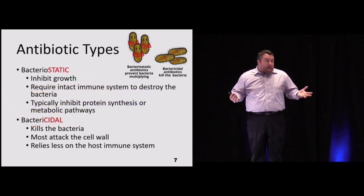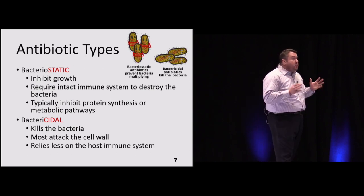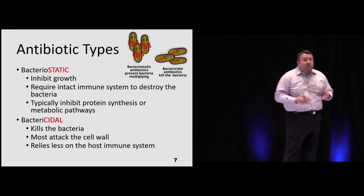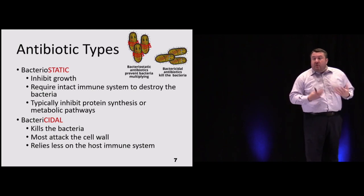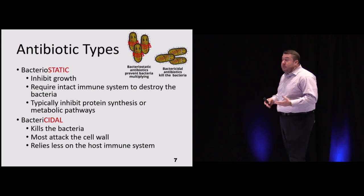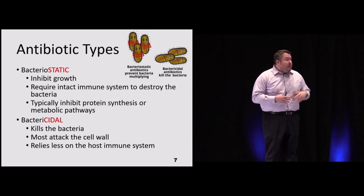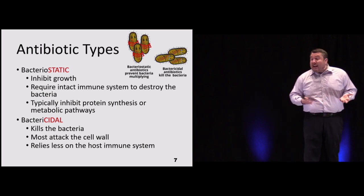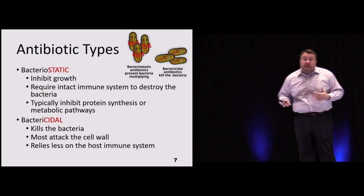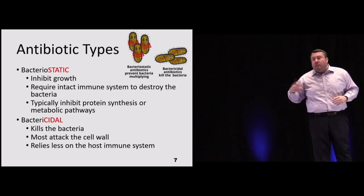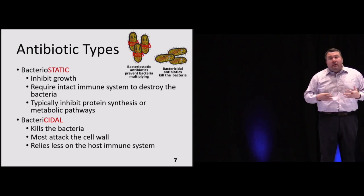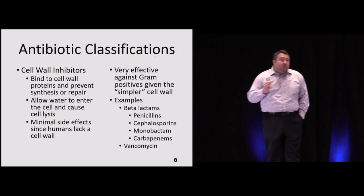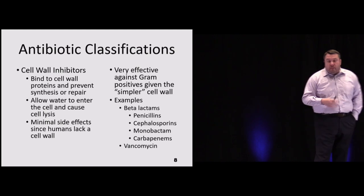Antibiotics are classified as bacteriostatic — slowing or inhibiting growth — or bactericidal — actively destroying bacteria. The key factor is the patient's host immune system. If the patient is immunocompromised or critically ill, we should use a bactericidal agent. If they're immunocompetent with a community-acquired infection managed outpatient, a bacteriostatic agent may suffice. Patients on immunosuppressants or chemotherapy probably need a cidal agent so their immune system doesn't have to work as hard.